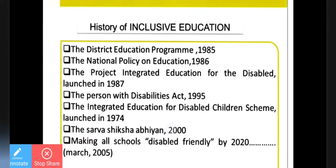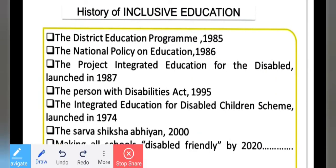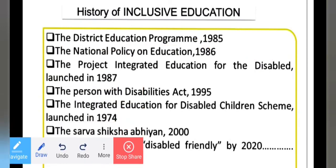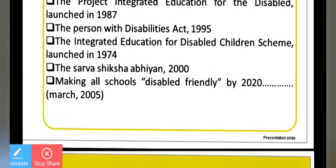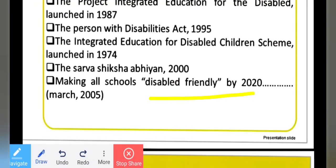Now let's talk about the history of inclusive education. The District Education Program (DEP) came in 1985. National Policy on Education was highlighted in 1986. Project Integration — education for disabled children — was implemented in 1987. In 1995, the Persons with Disabilities Act pushed for integrated education for disabled children. A scheme was made in 1974. Sarva Shiksha Abhiyan was implemented in 2000-2001/2002.